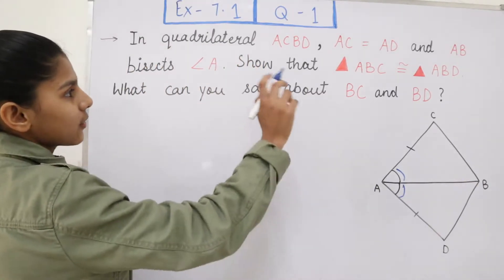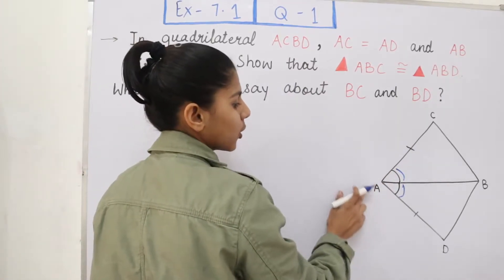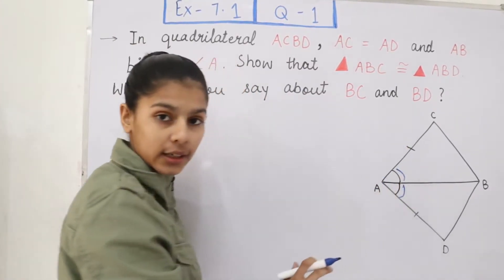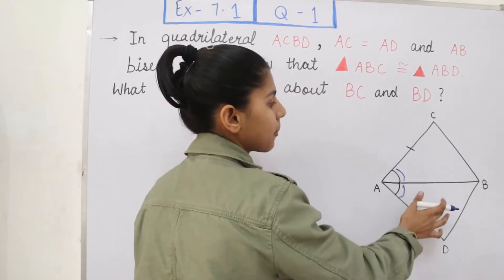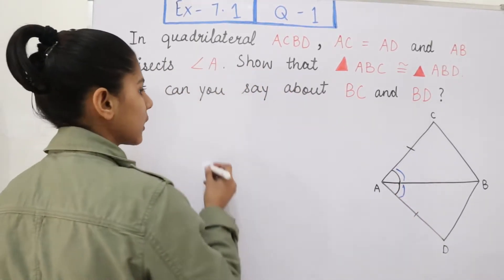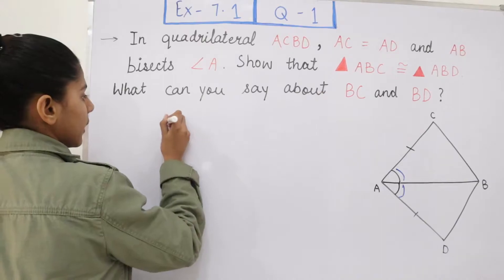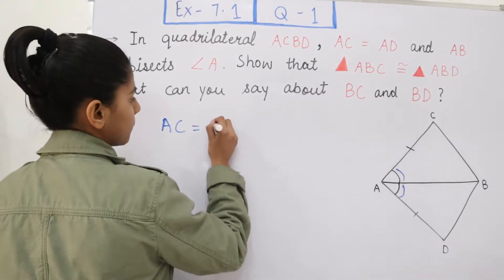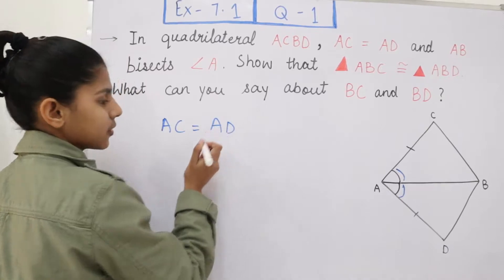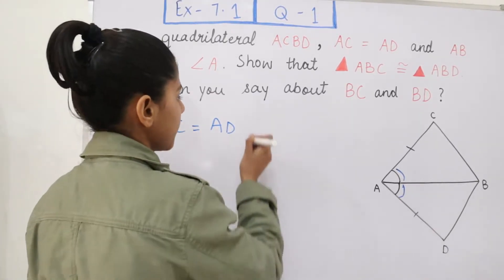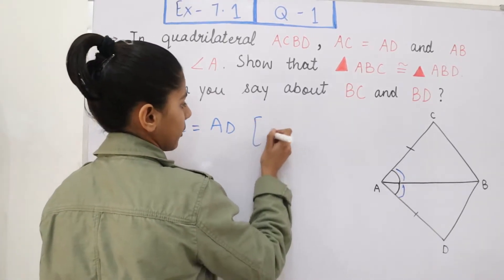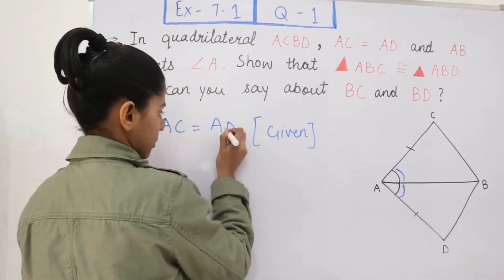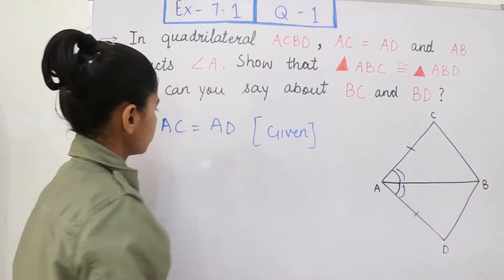First, you can see that it is given in the question that AC is equal to AD. AC is a part of triangle ABC and AD is a part of triangle ABD. So we can write AC = AD, and the reason in the bracket will be 'given', because it is given to us in the question that they are equal.